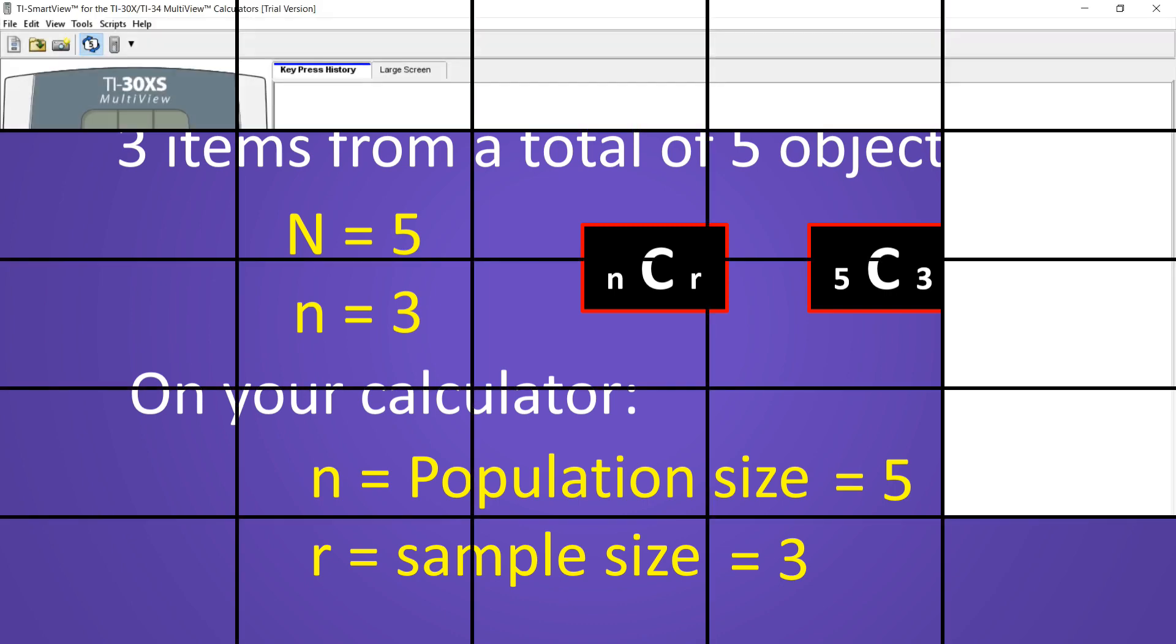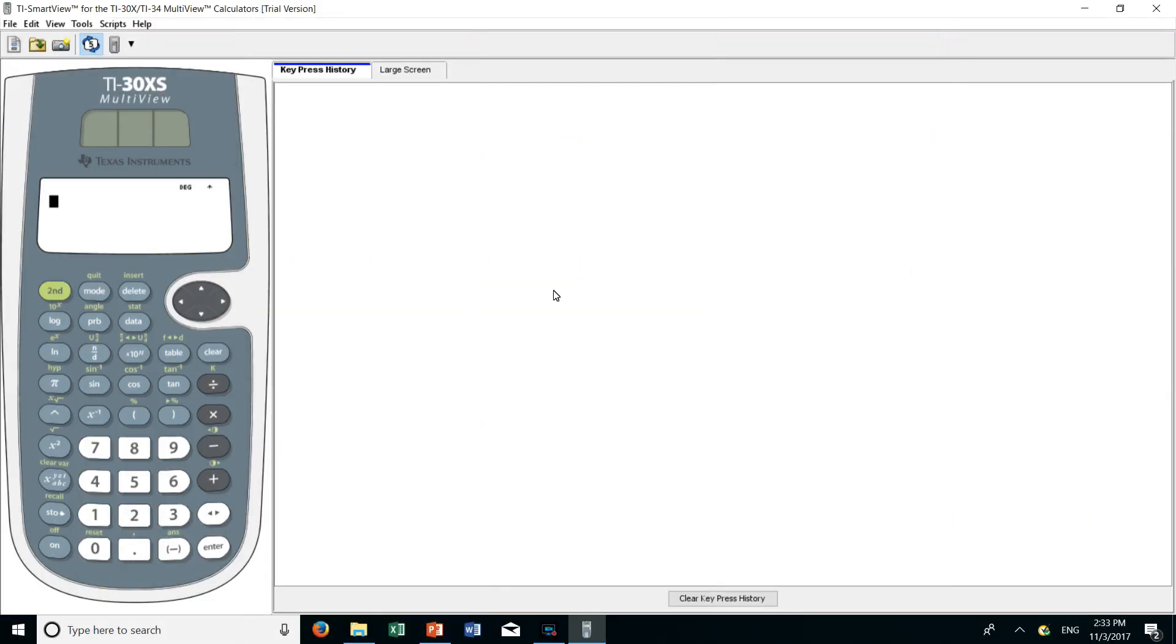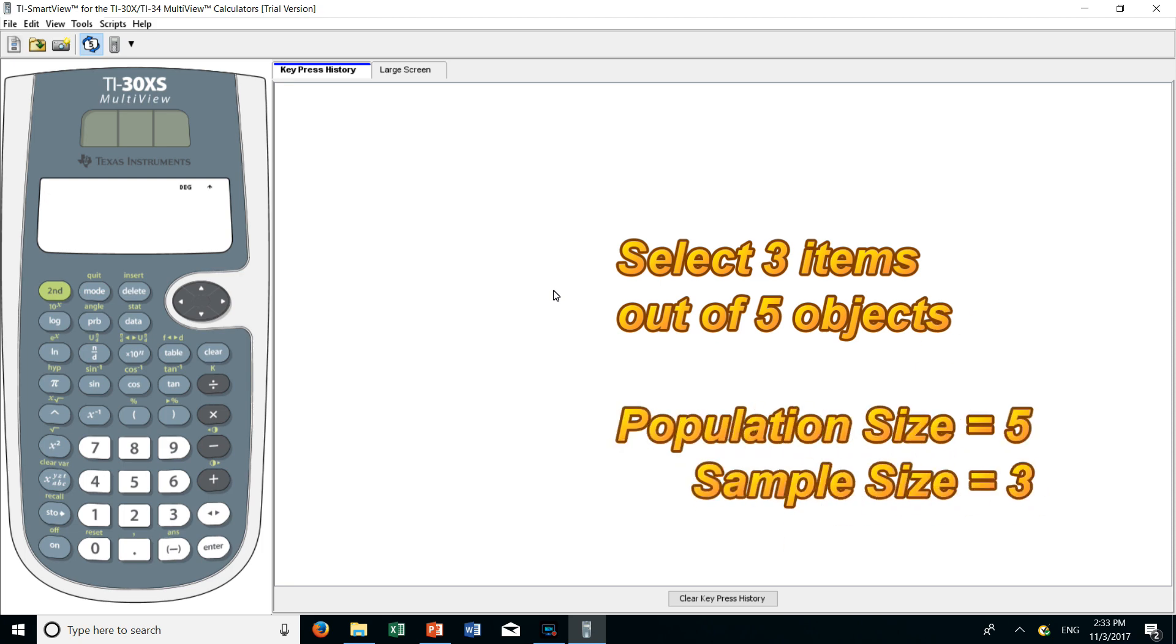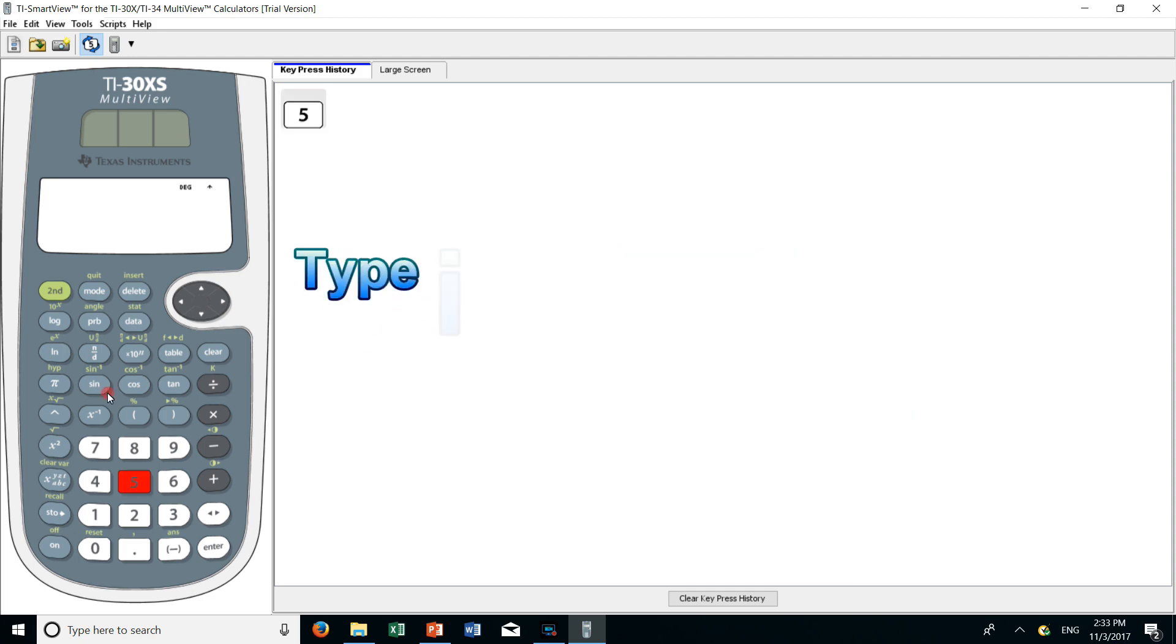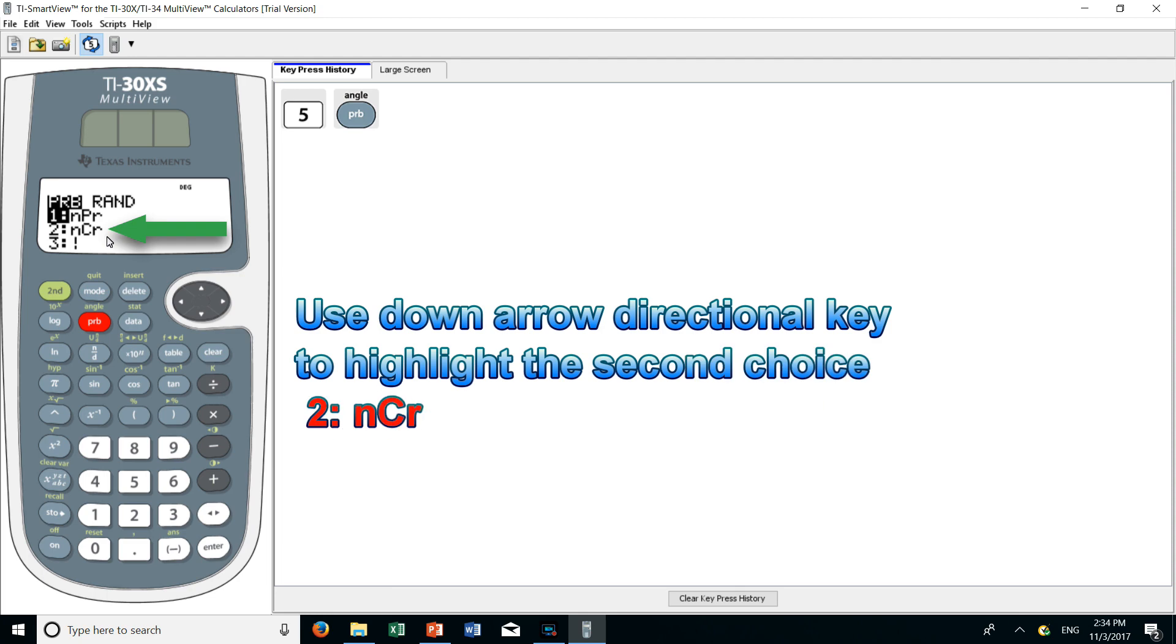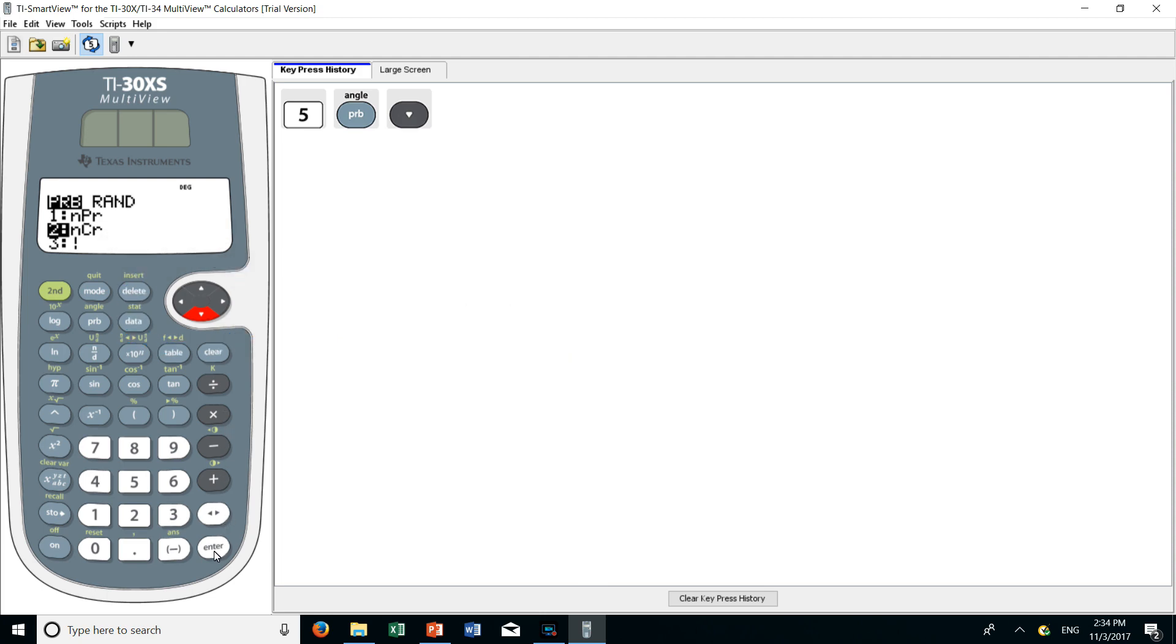Okay, let's do this on the calculator. How many combinations can we get if we select three items out of a total of five objects? So first type in the total number of objects, that's five. Then we press the PRB button, the probability button, and as soon as we do that we see there are three choices available: permutation, combination, and factorial. To select combinations, which is the second choice, we use the down arrow directional key and move the cursor so that the second choice is highlighted as you can see here. Then we press enter to select that choice.